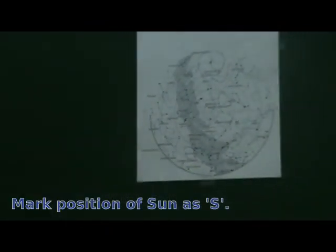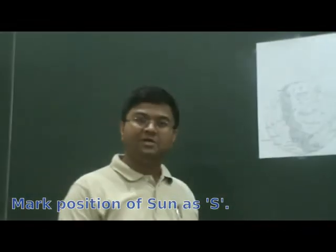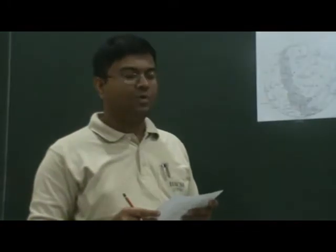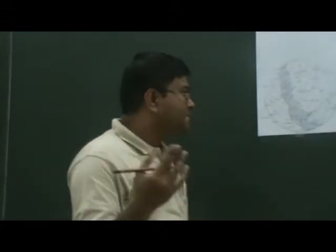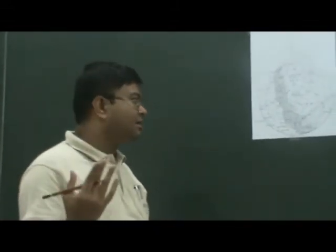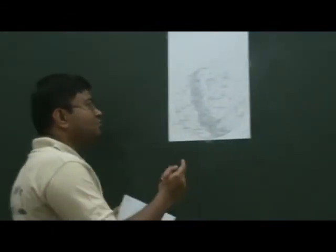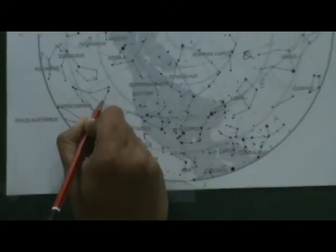Mark the approximate position of the sun on the map as S. There are two ways of doing it. One way is to simply notice the time given is 9 AM. If the sun approximately rises between 6 and 7 AM and crosses the meridian around noon, we would expect it somewhere halfway between rising and the meridian — so somewhere here.